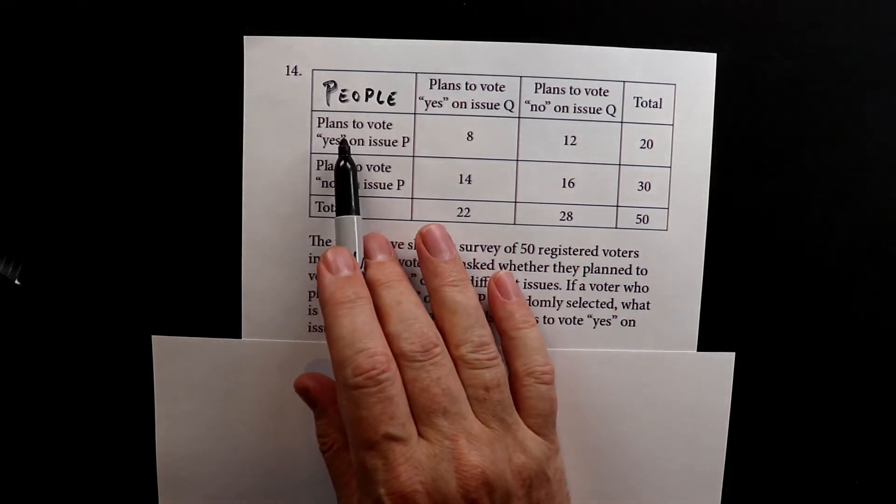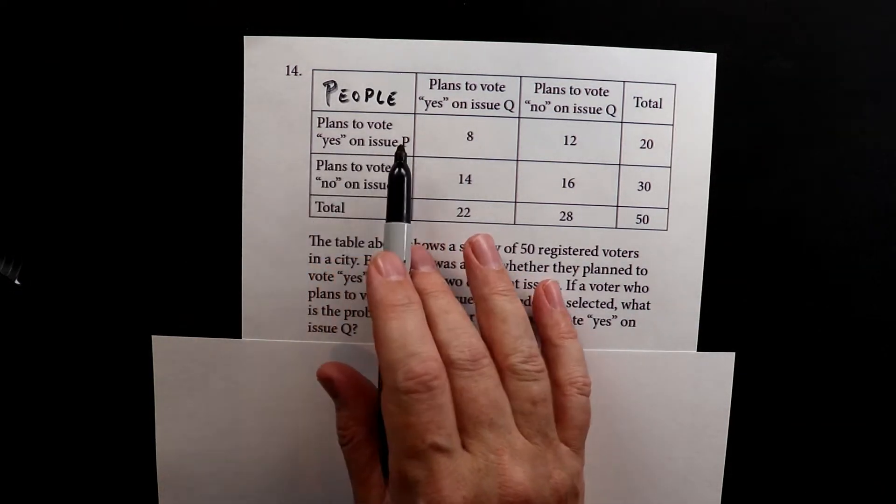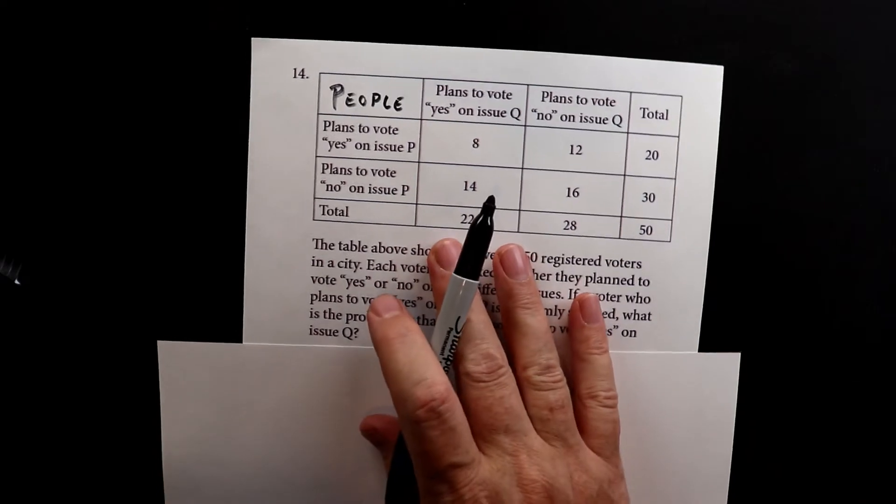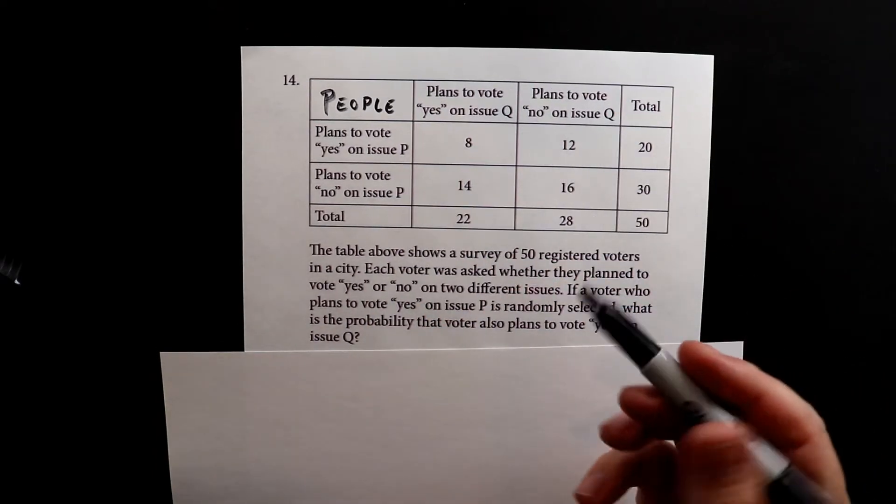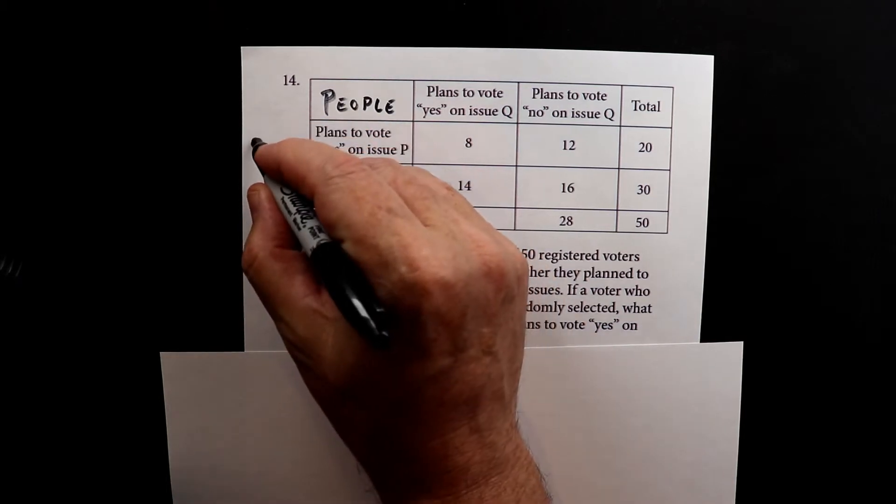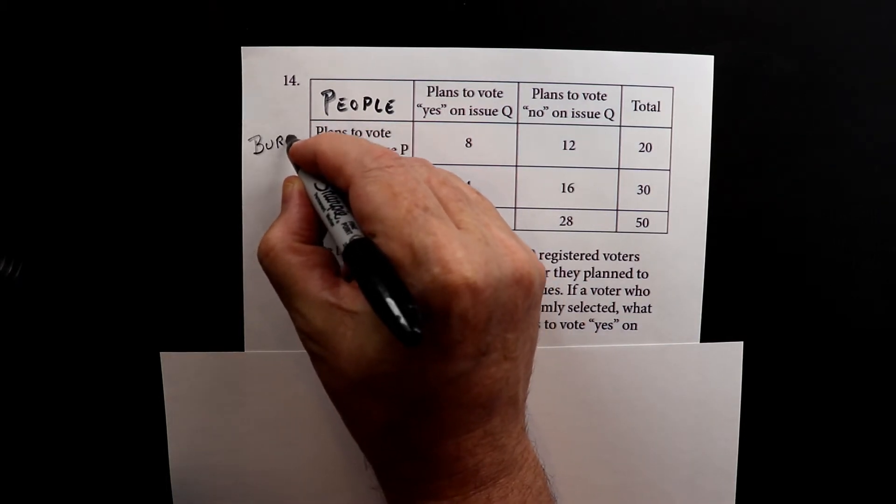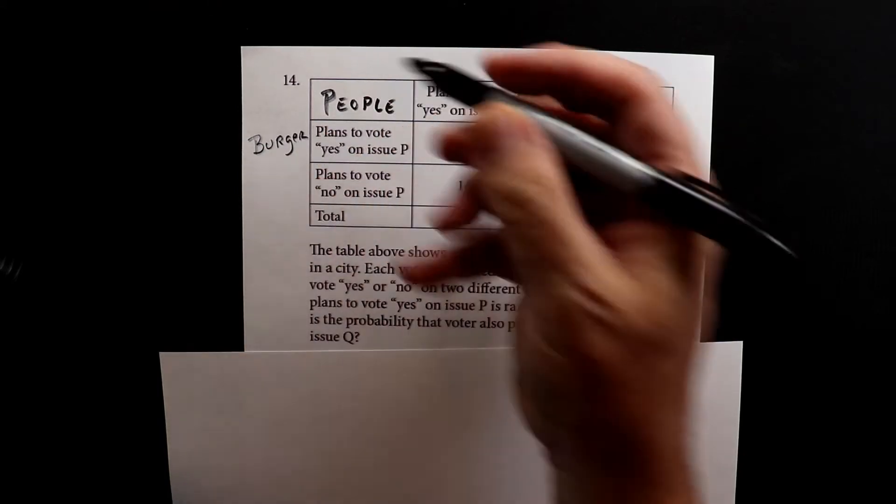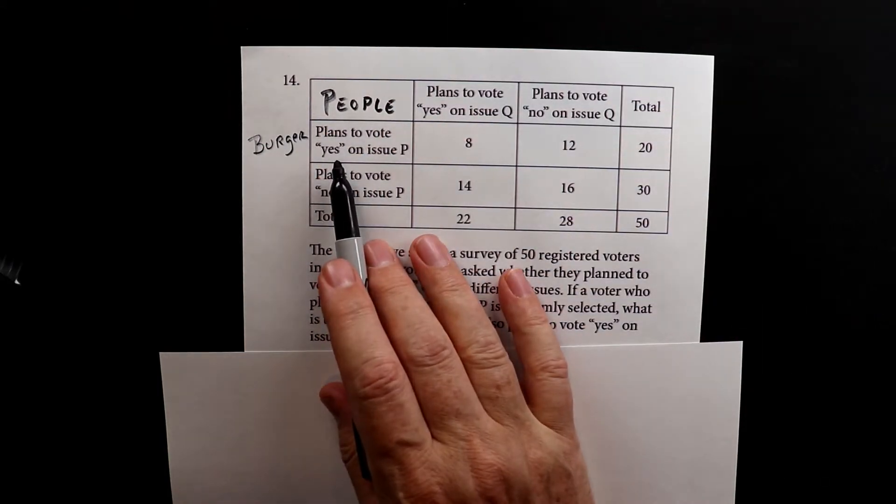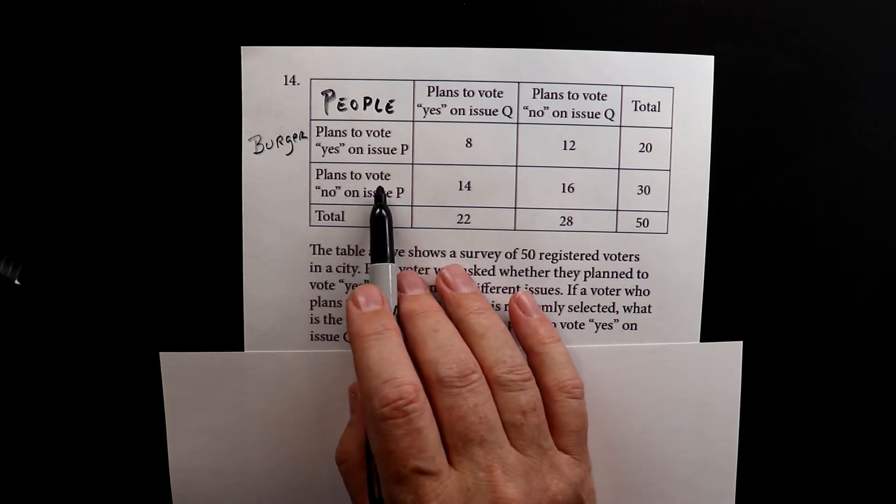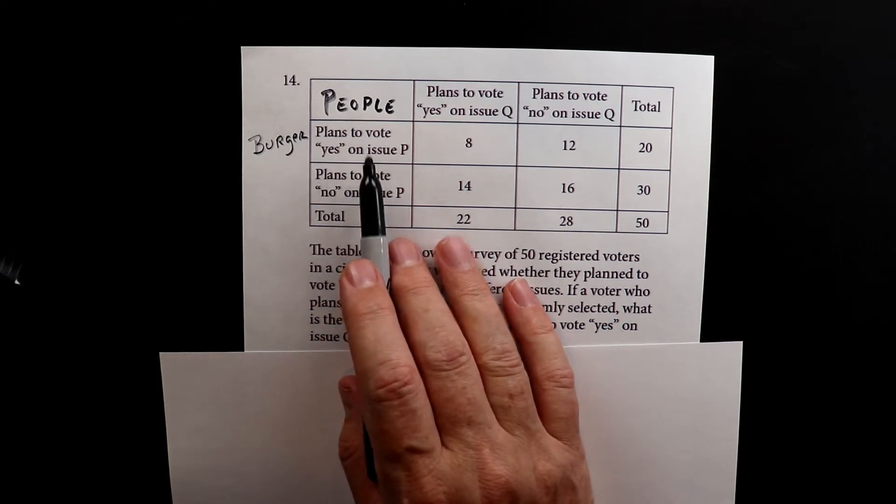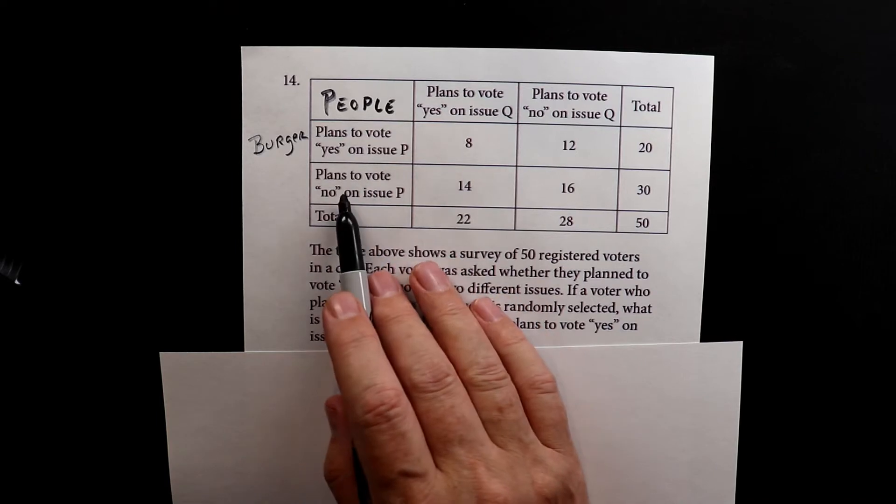These are people who plan to vote yes on issue P, and I'm just going to make up an issue of who likes hamburgers and who doesn't like hamburgers. So this is the burger issue. These are people that like burgers, so they vote yes, and these are the people that vote no. They ask them, do you like hamburgers? And these people say yes, and these people say no.